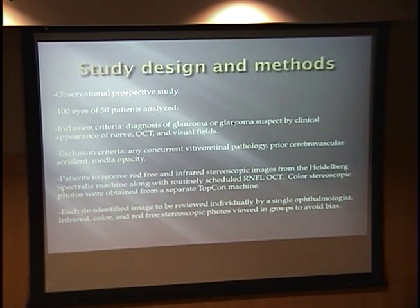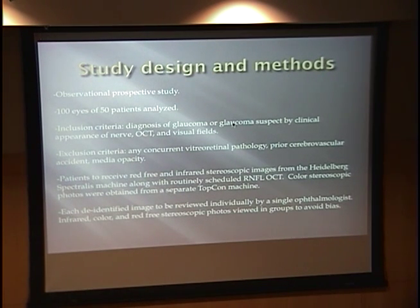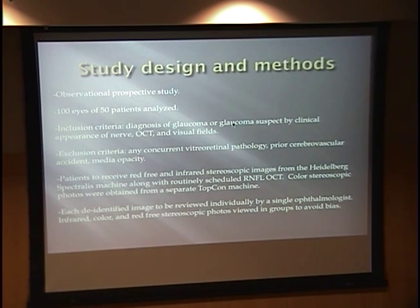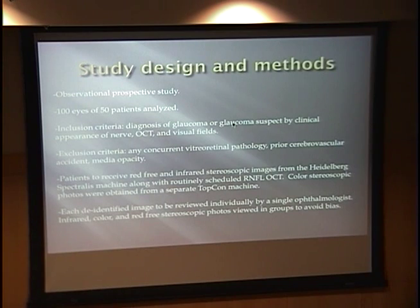The study I'm working on at VCU is an observational prospective study. The goal is 100 eyes of 50 patients. Inclusion criteria is essentially glaucoma or glaucoma suspect; exclusion criteria is any other ocular pathology. Patients receive red-free, standard color, and IR imaging along with their regularly scheduled OCT. Images are de-identified and viewed in groups to help eliminate bias, then reviewed by a single ophthalmologist — my program director at VCU — who measures cup to disc.